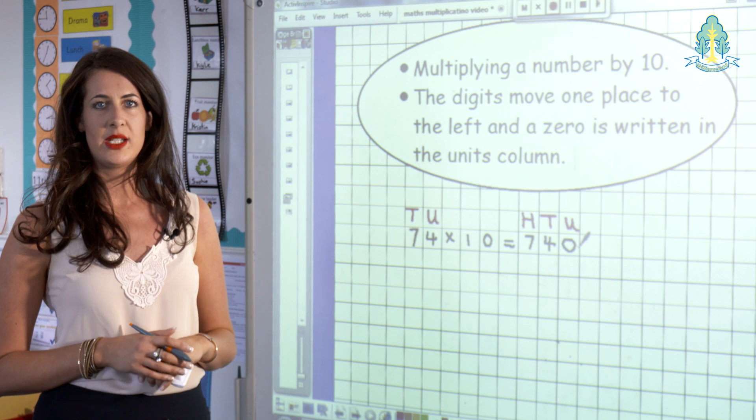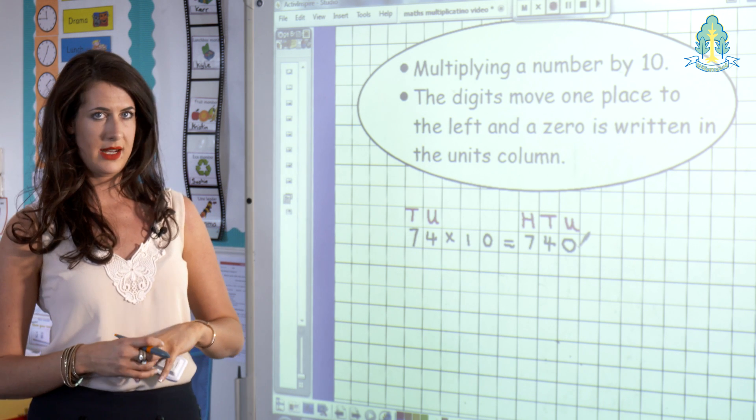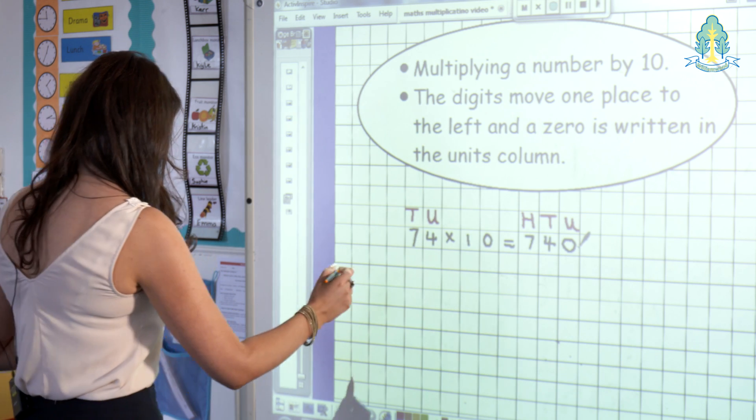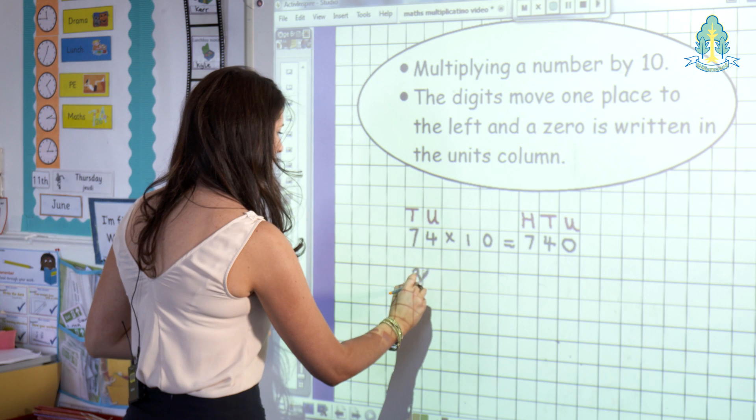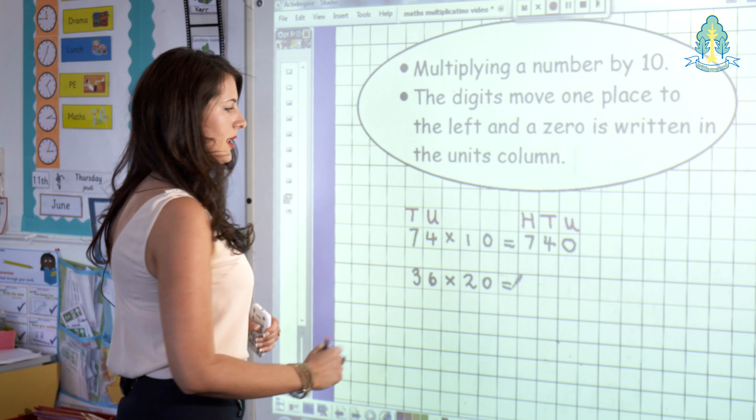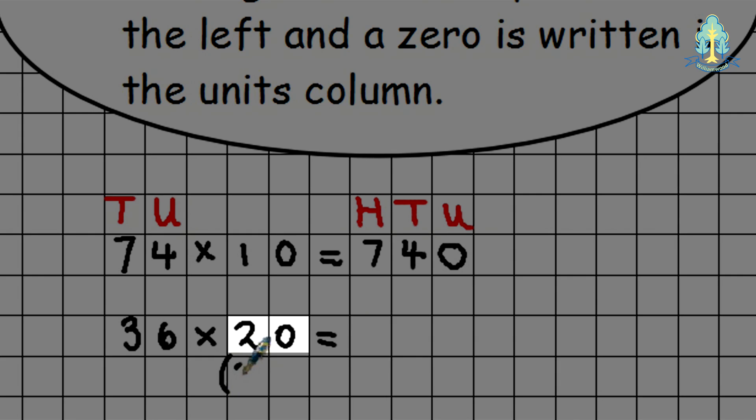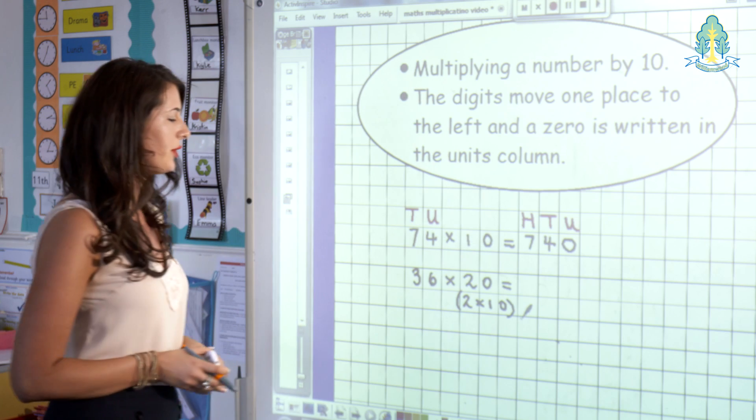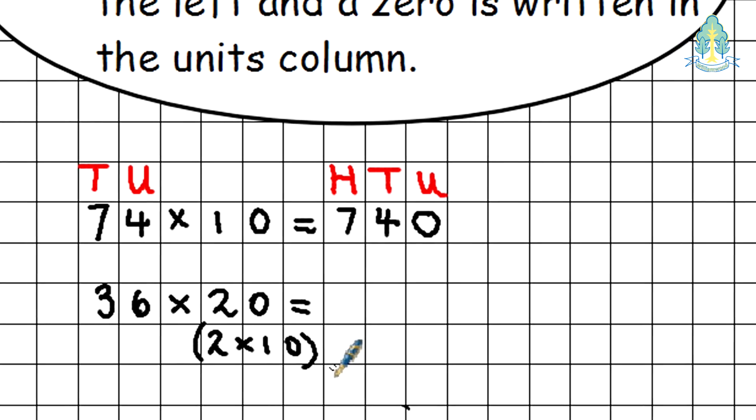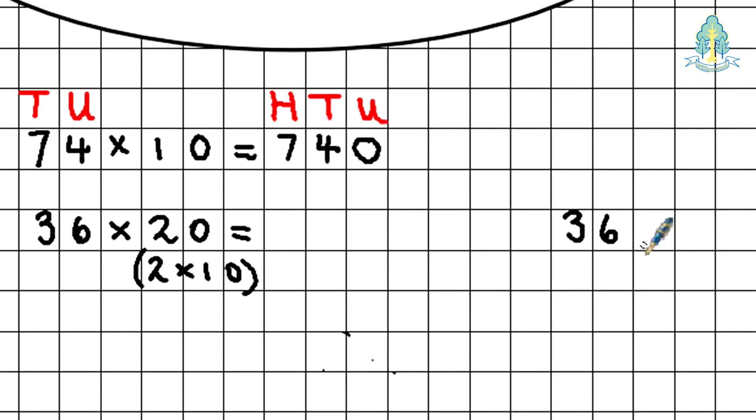This same strategy is applied when you're multiplying by another multiple of 10, for example 20, 30, 40, etc. In the example 36 multiplied by 20, the 20 here is the same as saying 2 multiplied by 10. So first of all we're going to multiply our 36 by 2. The children can use space to carry out the calculation.